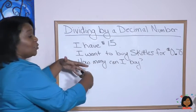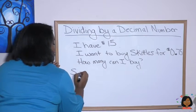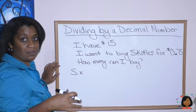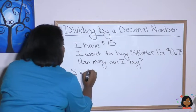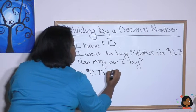Let's go ahead and write the equation for it. We know we're looking for the number of groups. We don't have that. So I'm going to say S for Skittles times how many each Skittles costs, which is 75 cents, and how much it equals, which is $15.